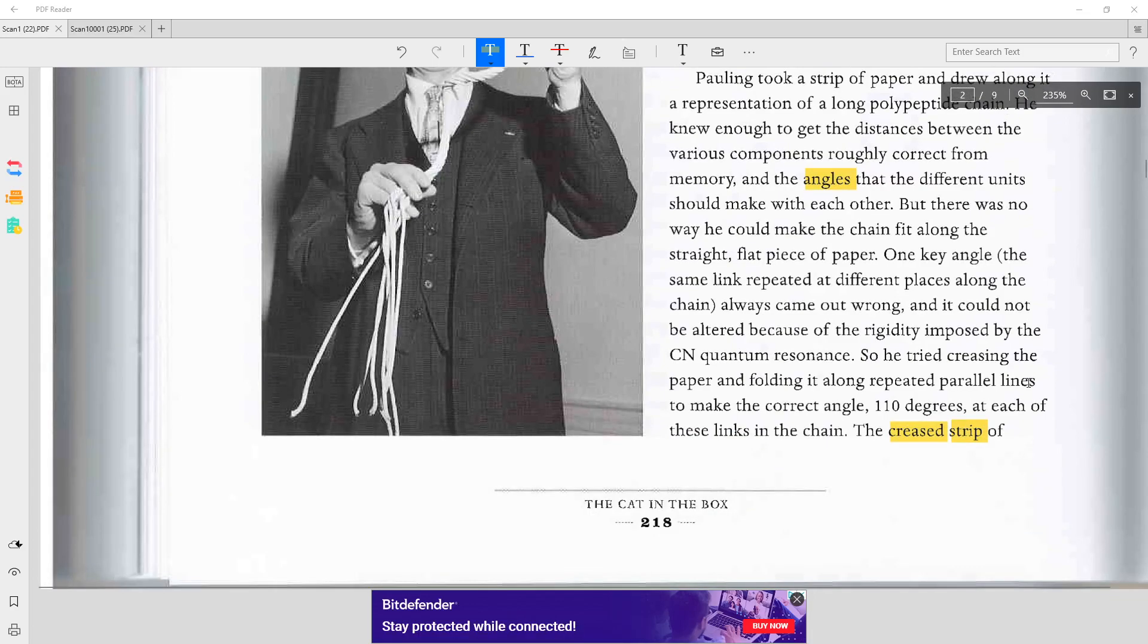One key angle, the same link repeated at different places along the chain, always came out wrong and it could not be altered because of the rigidity imposed by the CN quantum resonance.